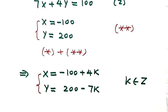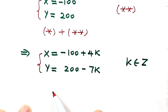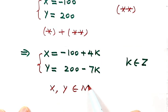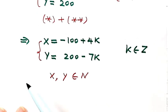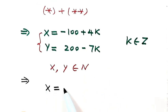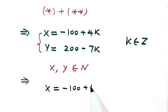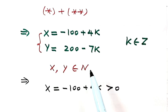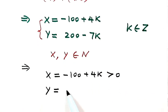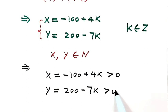But remember, we are looking for positive integer solutions. So here we require both x and y to be positive integers. That means x equals negative 100 plus 4k must be greater than zero, and y equals 200 minus 7k must also be greater than zero. So now we need to figure out the valid values of k.